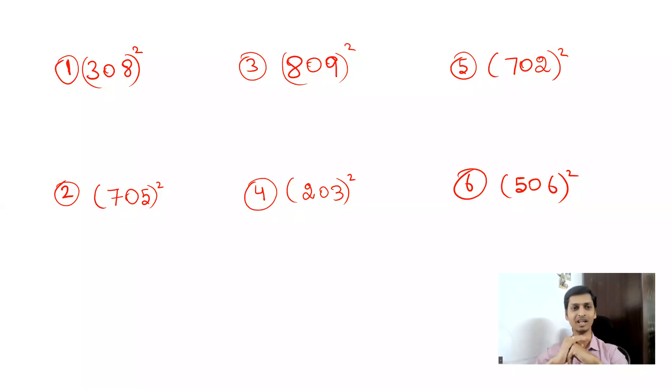Now, 308 square. For all these questions, you can see something common - the middle digit is zero. For all these questions, you'll get six-digit answers, so I'll draw six dashes. One, two, three, four, five, six dashes for your understanding.